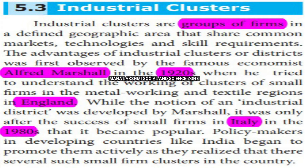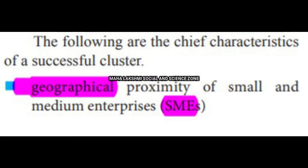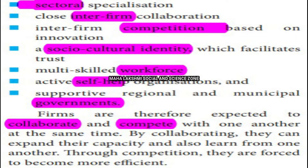India began to actively promote industrial clusters as it realized there are several such small firm clusters in the country. The chief characteristics of a successful cluster include: geographical proximity — small and medium enterprises forming in a specific geographical area; sectoral specialization — a specialized industry being present; and inter-firm collaboration — industries collaborating within the cluster.